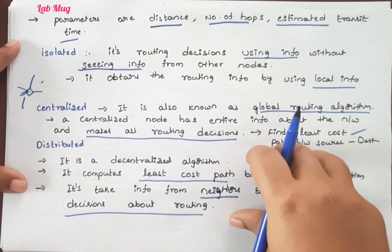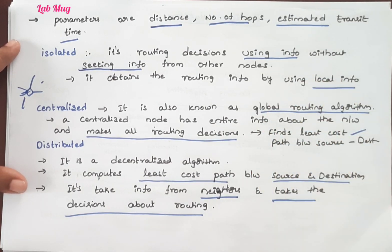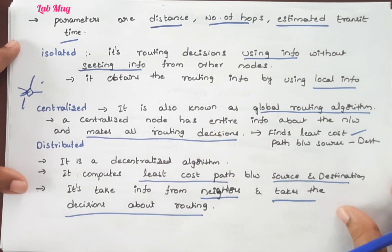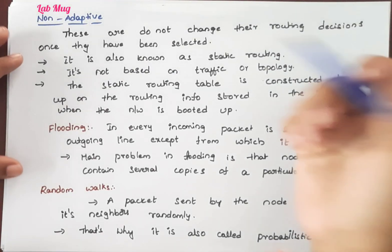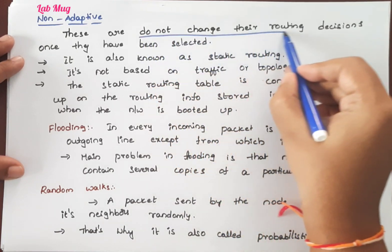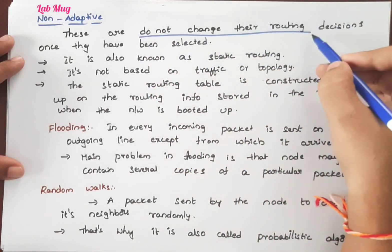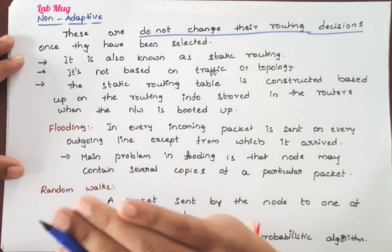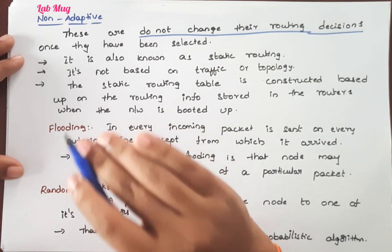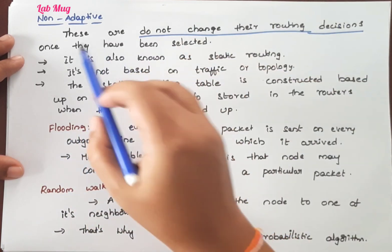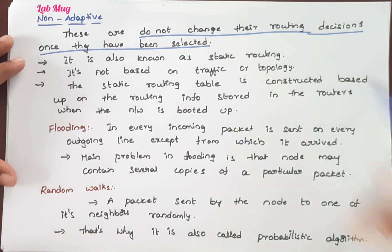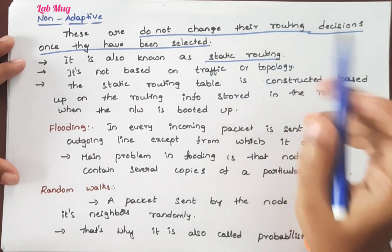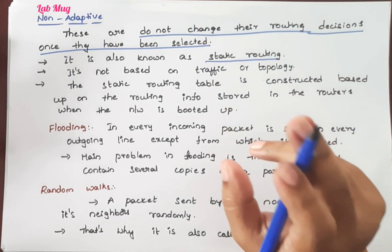The next one is non-adaptive routing. Non-adaptive is the opposite of adaptive — it does not change its routing decisions dynamically. This corresponds to static routing. There are only two types: static and dynamic. Adaptive is dynamic, and non-adaptive is the opposite — it is the static type.